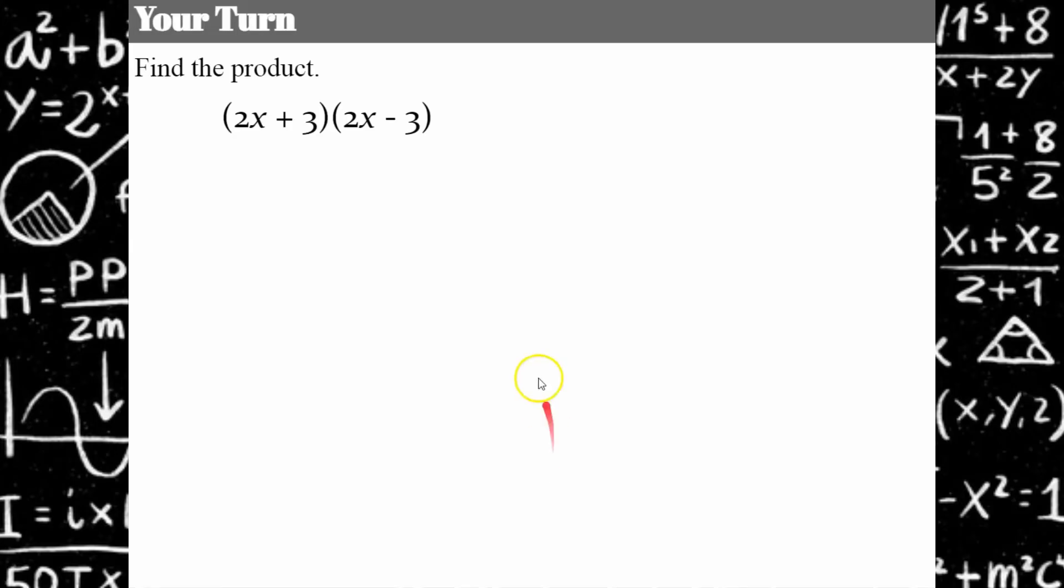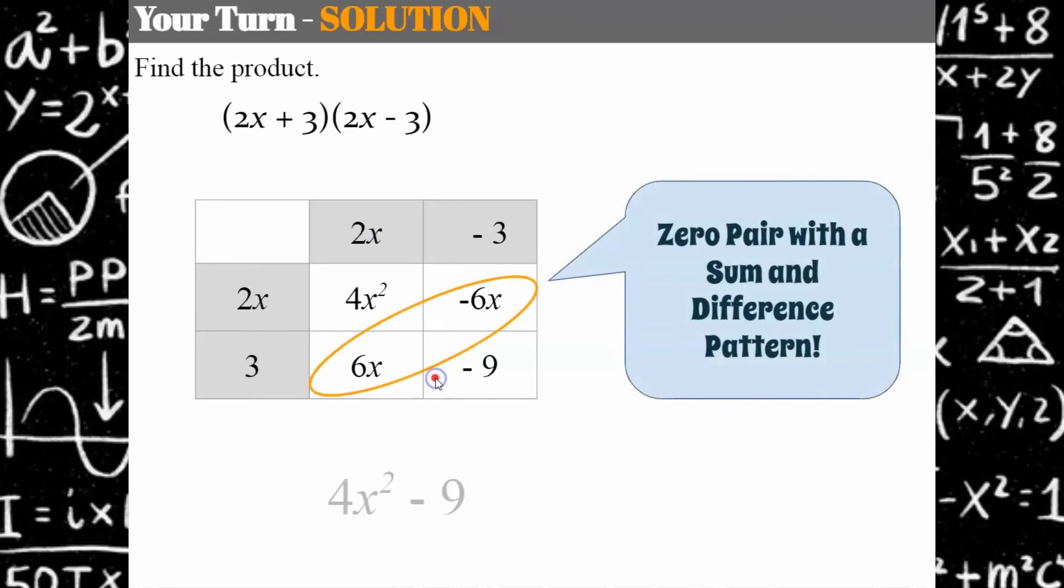Welcome back. Let's see how you did. So if you use the sum and difference pattern, you would square 2X, which is 4X squared, and square 3, which is 9, and you would end up with 4X squared minus 9.